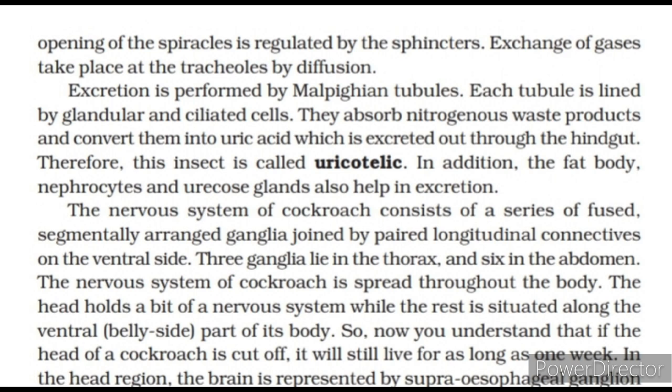Excretion is performed by Malpighian tubules. Each tubule is lined by glandular and ciliated cells; they absorb nitrogenous waste products and convert them into uric acid, which is excreted out through the hindgut. Therefore, this insect is called uricotelic. In addition, the fat body, nephrocytes and uricose glands also help in excretion. The nervous system consists of a series of fused, segmentally arranged ganglia joined by paired longitudinal connectives on the ventral side; three ganglia lie in the thorax and six in the abdomen. The nervous system is spread throughout the body. If the head of a cockroach is cut off, it will still live for as long as one week.